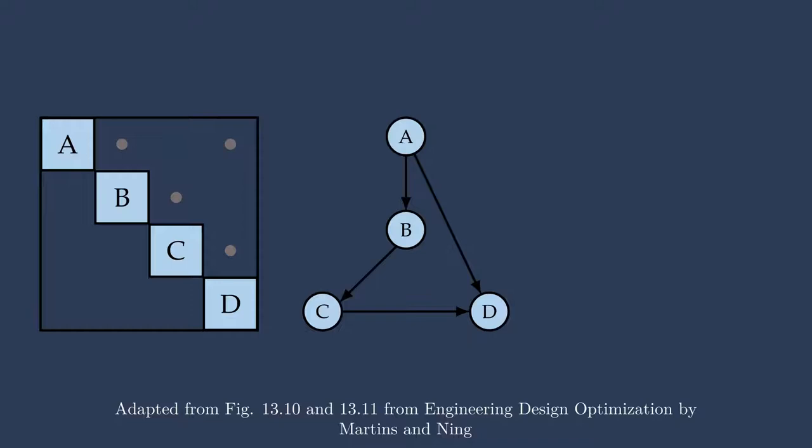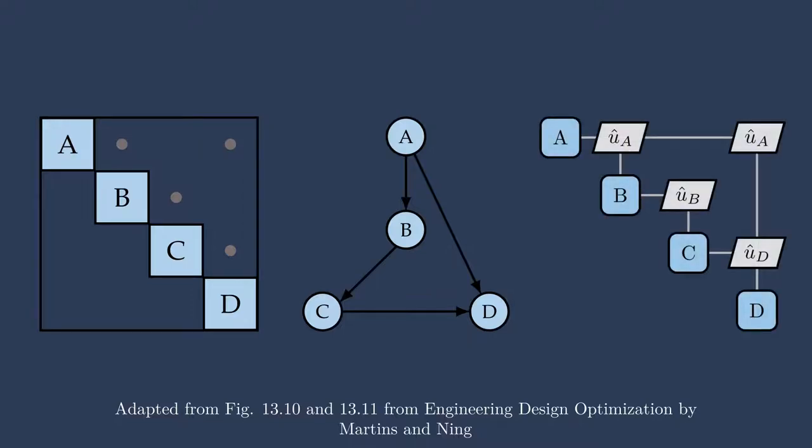For some people, they like looking at the system in the design structure matrix. Other people are maybe more used to the directed graph. I know a lot of the machine learning community is looking at directed graphs. It's reminiscent of neural network diagrams a lot of the time. And then on the right, we have the XDSM, or the extended design structure matrix. I have an entire lecture dedicated to understanding XDSM diagrams and what they mean. These are all three different depictions of the exact same feed-forward system.